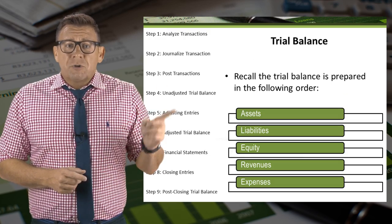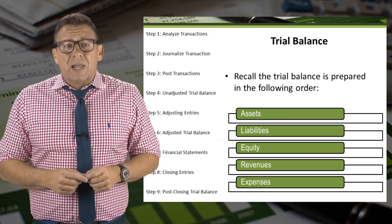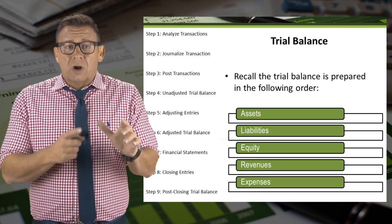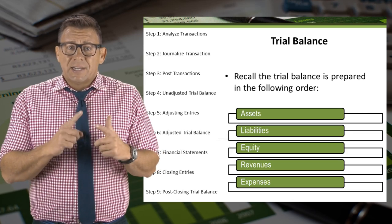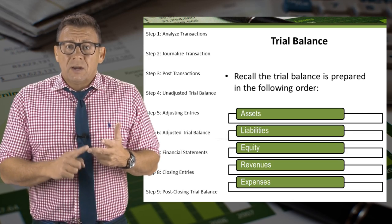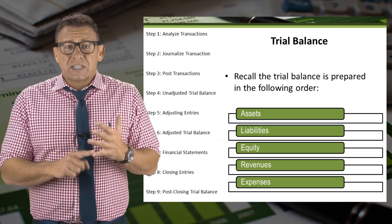The trial balance lists accounts in the following order: assets, liabilities, equity, revenues, and expenses.